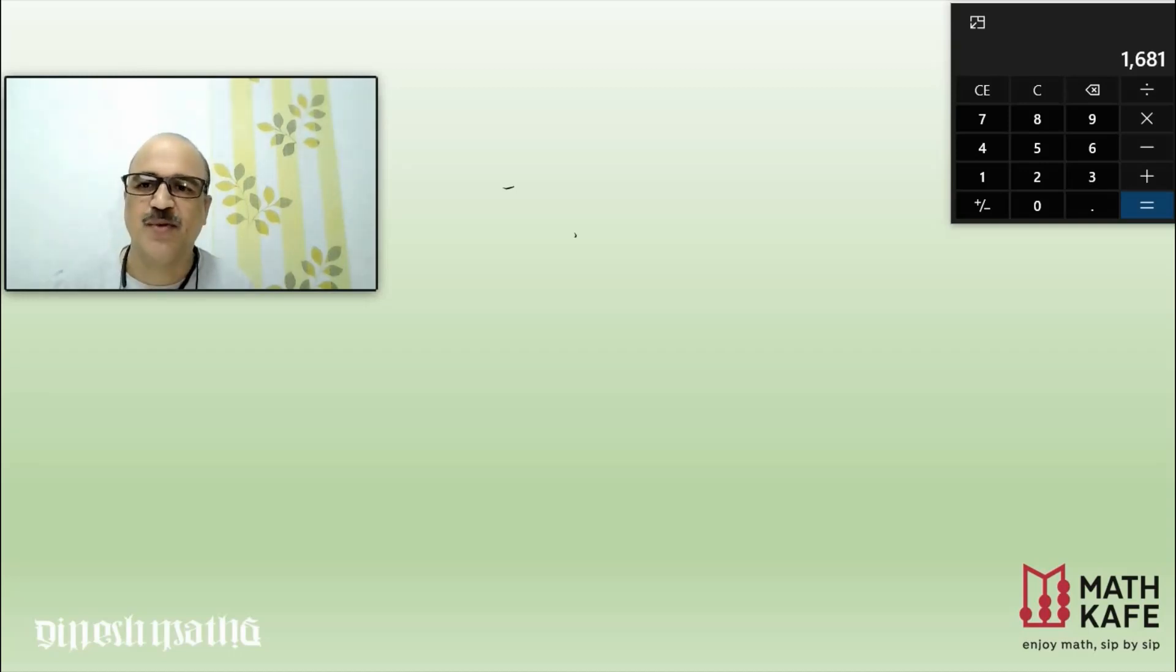No, as I said, it will work with any number of digits, but you need to be thorough with the multiplication. Let us see one another number, maybe 103 square. 103 square, as I said, separate the ones place digit, that is 103, ones place digit is 3. Please add: 103 plus 3, you know that it is 106, very good.